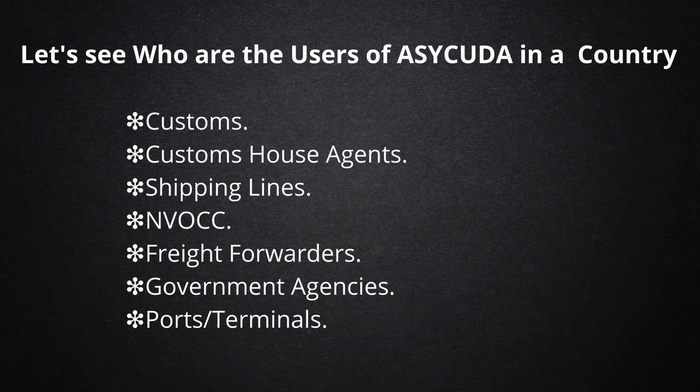Asikuta's latest version, Asikuta World, was introduced in 2016. Let's see who are the users of Asikuta in a country: Customs, Customs House Agents, Shipping Lines, NVOCC, Freight Forwarders, Government Agencies, Ports, and Terminals. For more information on the Asikuta System, please visit www.asikuta.org.